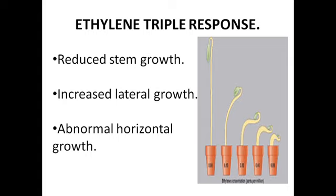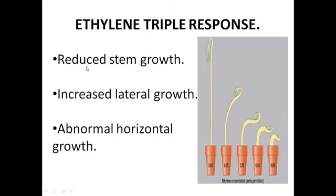One very important role of ethylene is the triple response. In a plant, ethylene induces a triple response consisting of: first, reduced stem growth — it does not allow the stem to grow much vertically; second, increased lateral growth — it induces growth laterally, increasing the growth of lateral buds; and third, abnormal horizontal growth — the plant grows horizontally rather than vertically.